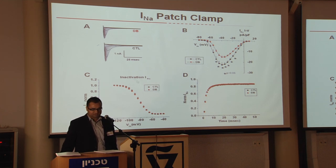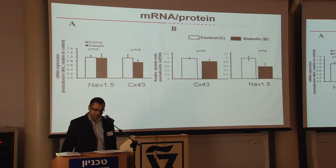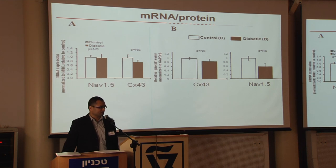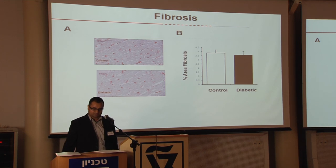We did not see any differences in steady-state inactivation or recovery from inactivation between control and diabetic cells. At the molecular biology level, we did not find any differences in NaV1.5 — the main molecular correlate of the sodium channel — at the mRNA level or protein level, though there tends to be a reduction in protein level that is not statistically significant. Gap junctions, represented by connexin 43, the main gap junction in the ventricle, also showed no difference in mRNA or protein levels. We also stained for fibrosis using picrosirius red and found no difference in fibrosis levels between control and diabetic hearts.